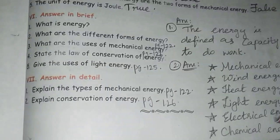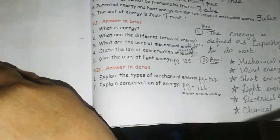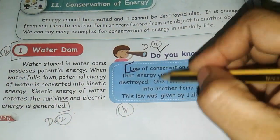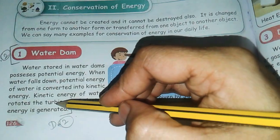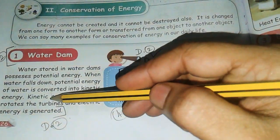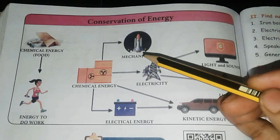Next question: explain conservation of energy. Page 126. The water dam example. At school level if they ask you to draw the diagram, you can draw it, otherwise no need.